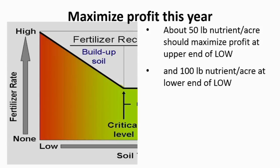The really critical spot for making recommendations is when you're below the critical levels — that's where you have a probability of getting a profitable yield increase. The standard recommendation satisfies crop removal and adds extra P and K to build soil back up to the maintenance range. But in a tight year, that recommendation will be too high to maximize profit. At the low end of the critical category, about 100 pounds of either P or K would maximize profit; approaching the critical level, about 50 pounds per acre is needed.